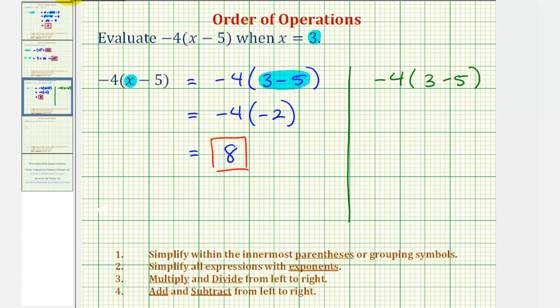So to distribute, we would multiply negative four by both of the terms inside the parentheses. So negative four times positive three is equal to negative 12, and negative four times negative five is equal to positive 20. So we'd have plus 20. And negative 12 plus 20 is equal to positive eight.